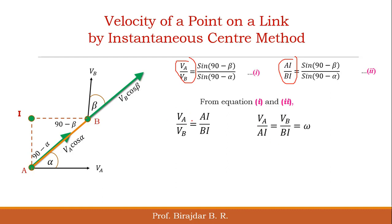Rearranging this: VA divided by AI equals VB divided by BI, and this ratio equals omega — the angular velocity of link AB. So the velocity of a point divided by its distance from the instantaneous center is constant and equals omega.